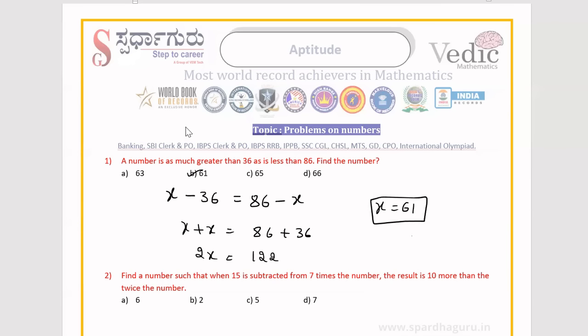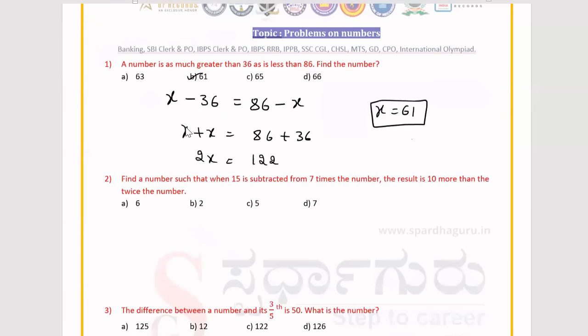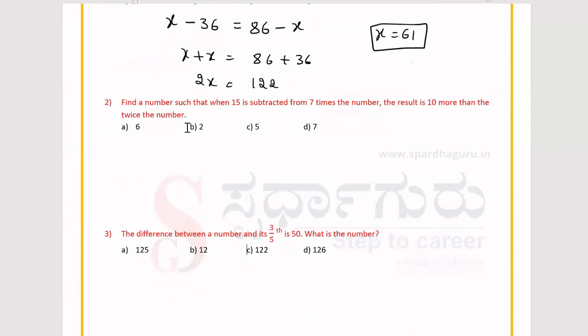Now we'll see the second problem. Find a number such that when 15 is subtracted from 7 times the number, the result is 10 more than twice the number. Consider the number which is 7 times, so 7x.